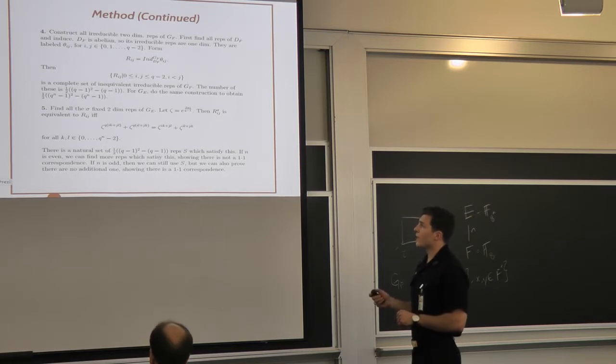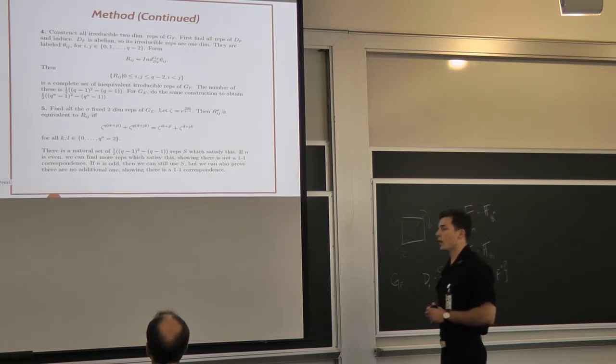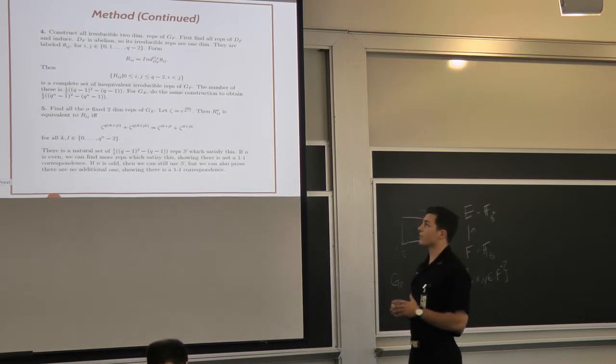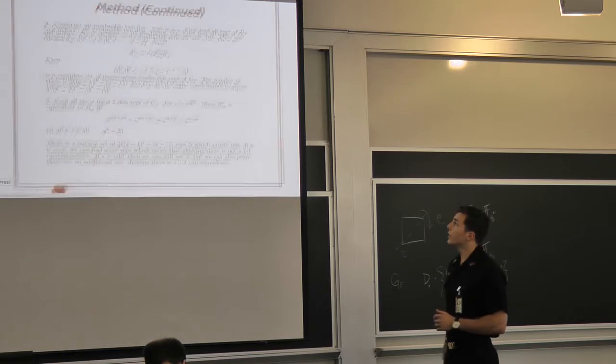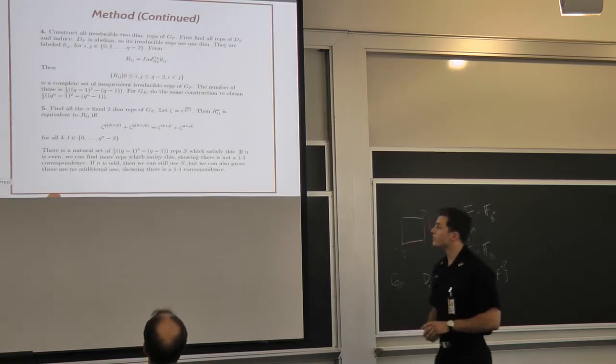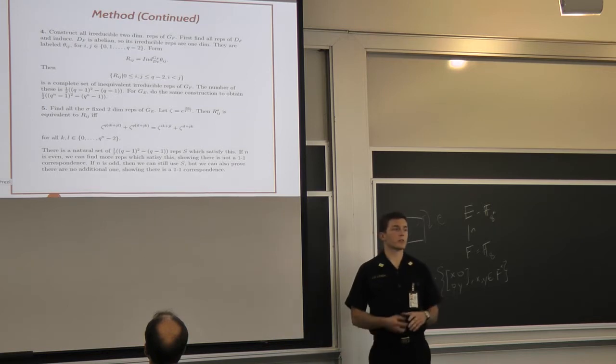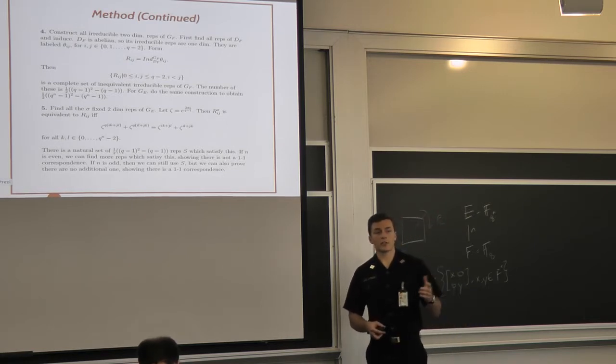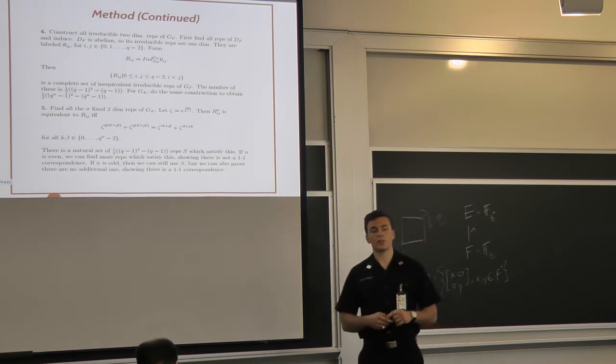Once we did that, we came to this equation right here, when we started to look at the sigma fixed representations. And that formula was actually crucial in finding all of the irreducible, inequivalent, and sigma fixed ones. It turns out that when you take this equation and start looking at all the possible values for i and j, you find that when n is even, you actually find more representations than you need. So there's not a one-to-one correspondence in those two-dimensional representations. But if n is odd, you find that there is a one-to-one correspondence. So if you have an odd field extension, then all of the sigma fixed representations, one-dimensional and two-dimensional, have a one-to-one correspondence to all representations of G sub F.